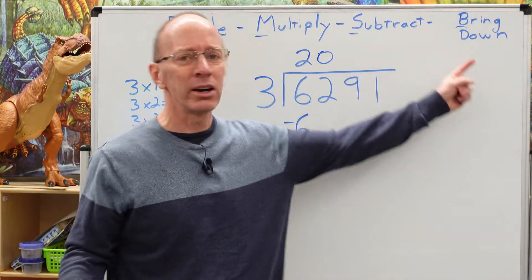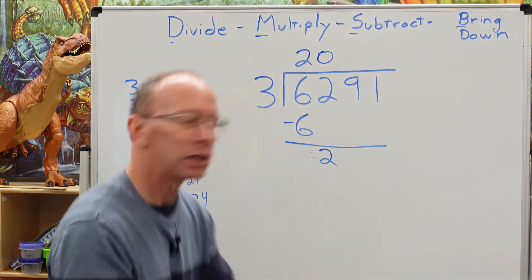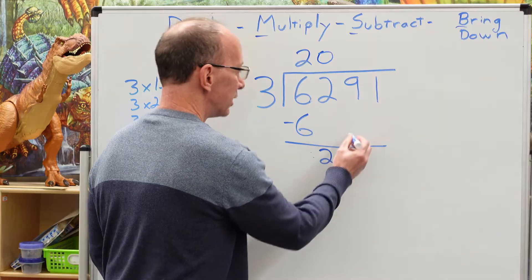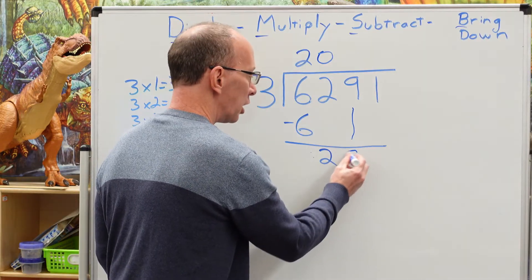So we put a zero right here. All right, and then we go all the way over here to bring it down. Bring that next number down right there.